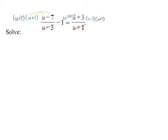Now FOIL the first piece: that gives u squared minus 6u minus 7. Then there's a minus sign in front of the next piece — that negative is really important, keep parentheses. FOIL that group to get u squared minus 2u minus 3. On the right side, multiply to get u squared minus 9.